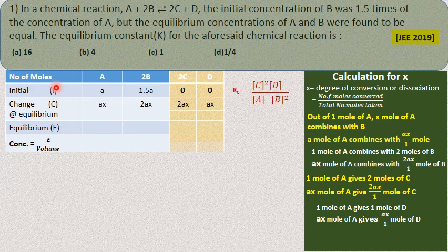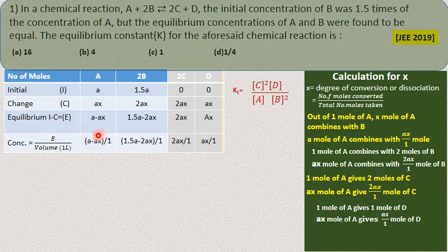Number of moles at equilibrium equals I minus C. Initially A moles of A were taken, so at equilibrium: A minus Ax for compound A. For B: 1.5A minus 2Ax. C and D are products with nothing initially, so at equilibrium C is 2Ax and D is Ax. These are the moles of all materials present at equilibrium.